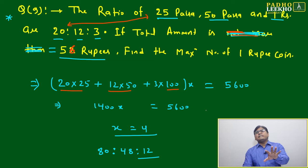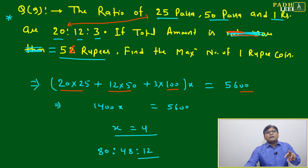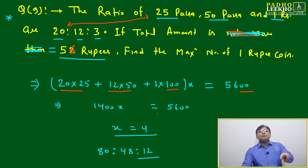For 1 rupee, we will change it to the form of paise. This is 56 rupees. We will change it to paise: 56 into 100, which gives 5600 paise.